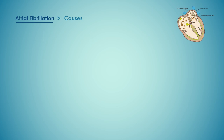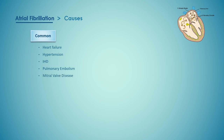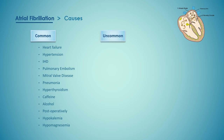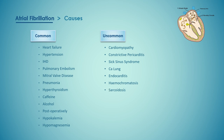Many forms of heart disease can present with atrial fibrillation, particularly those associated with dilatation of the atria. Common causes include heart failure, hypertension, ischemic heart disease, pulmonary embolism, mitral valve disease (still a common cause in underdeveloped countries), pneumonia, hyperthyroidism, caffeine, alcohol, postoperative states, and electrolyte abnormalities like hypokalemia or hypomagnesemia. Rare causes include cardiomyopathy, constrictive pericarditis, sick sinus syndrome, lung cancer, endocarditis, hemochromatosis, and sarcoidosis.